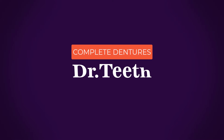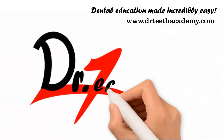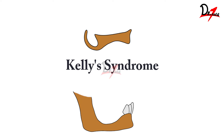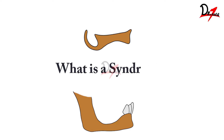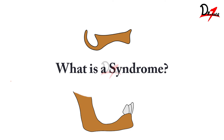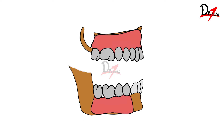The combination syndrome is also known as Kelly's syndrome because it was first noticed by Kelly in 1972. It is also called the anterior hyperfunction syndrome, and we will understand why in a while. A syndrome involves a number of clinical features — like Down syndrome has multiple clinical features. Similarly, combination syndrome presents with many clinical features in the oral cavity. It is found in patients who wear a maxillary complete denture with a mandibular distal extension denture — that is, a distal extension removable dental prosthesis.